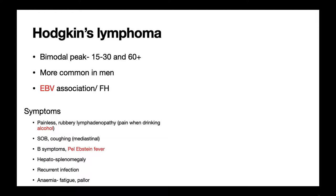We also have what are termed B symptoms, seen in lymphomas: a fever over 38°C, weight loss of greater than 10% of normal body weight within six months, and night sweats. In this scenario the patient had a fever that was cyclically rising and falling — this is known as a Pel-Ebstein fever and is something you may see in Hodgkin's lymphoma. The other condition to consider with a cyclically rising and falling fever is an abscess. If lymphoma is left long enough, it may progress to affect the liver or spleen, causing organomegaly.